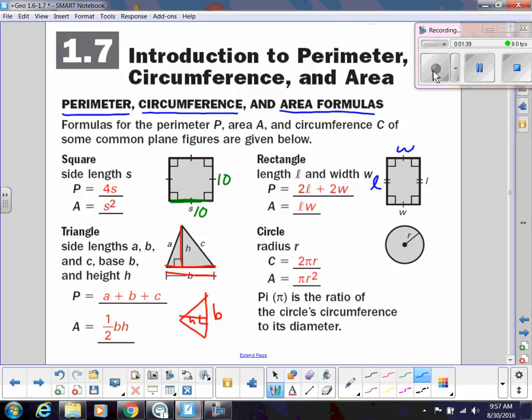And then for your circle, your circumference, or in other words, perimeter, is 2πr. Remember, r is your radius, and then the area is πr squared. Keep in mind that radius is always half of the diameter, so the diameter goes all the way across the circle, and radius is always half of that.